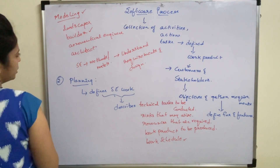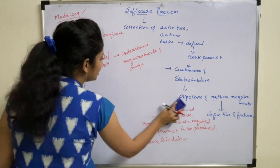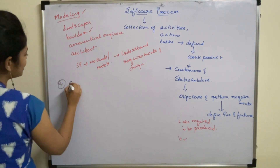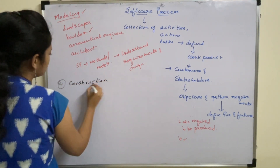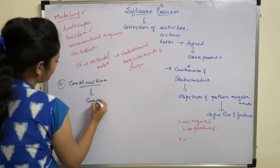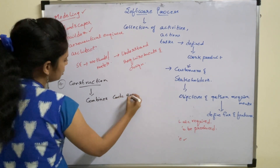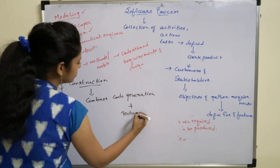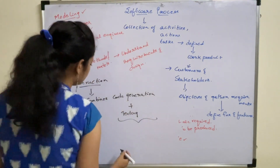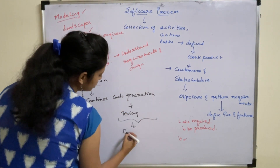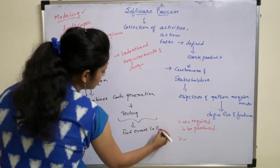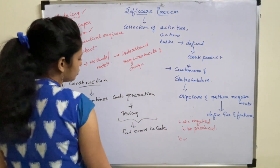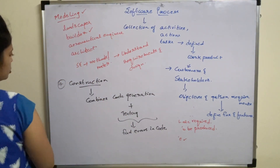The fourth activity is construction. This activity combines code generation and testing activities. Both are combined to find errors in the code — debugging is performed to check whether there are any errors in the program code, and that is done during the construction activity.